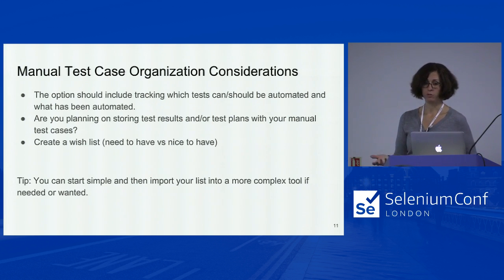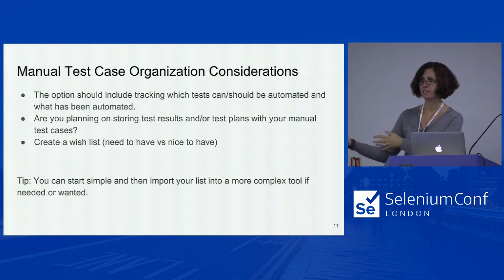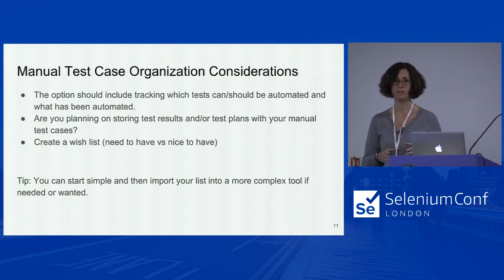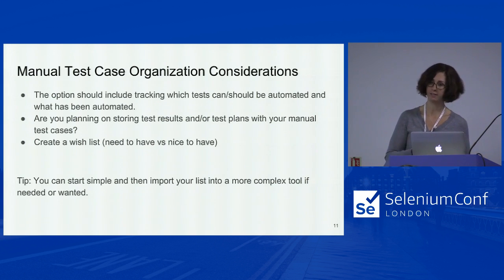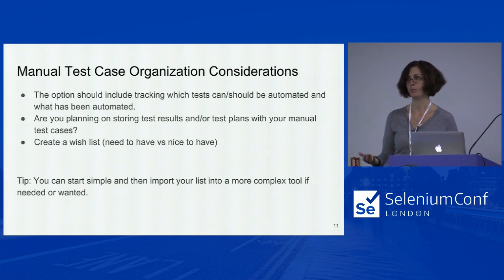Do you want your manual test case solution to integrate with your defect tracking software, with Slack, or to be able to call your automation? You need to have a list of what tests can be automated and what tests have been automated — to put it bluntly, you want to be able to say here are all the great things we automated, and here is what we're working on. You don't want QA to just go off and think that they know the priority. Make it easy on you and your team, and communication gets a lot better. Also consider: are you planning on storing test results with your test cases?